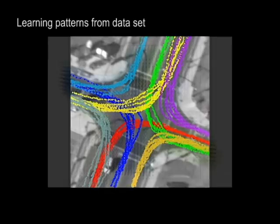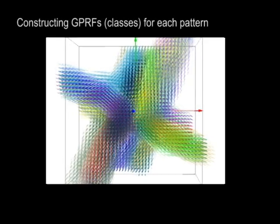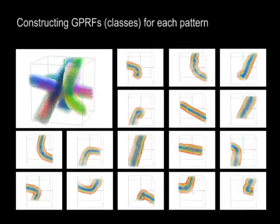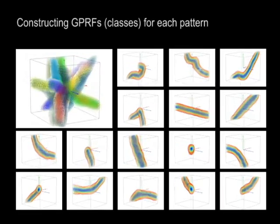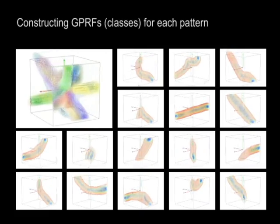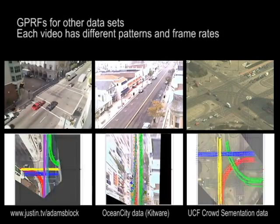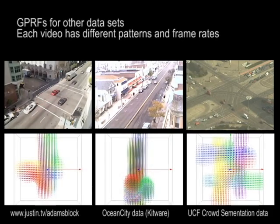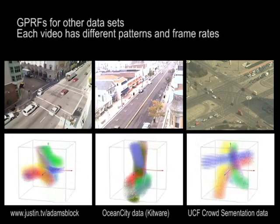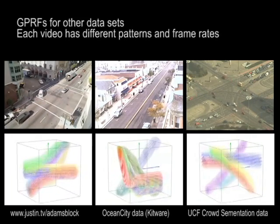Here we show trained GPRFs for trajectory classes from one of our datasets. There are a total of 17 classes shown here, and you can also see the separate GPRF for each trajectory class. We evaluate our approach on three other datasets. Each dataset contains its own trajectory classes with different frame rates, and each trajectory class is given its own color in the bottom figures.